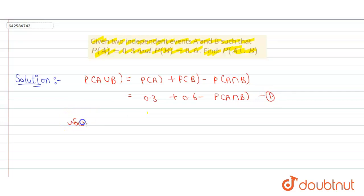Now, the formula for P(A intersection B) is P(A) into P(B), that is 0.3 into 0.6, which is coming out to be 0.18.